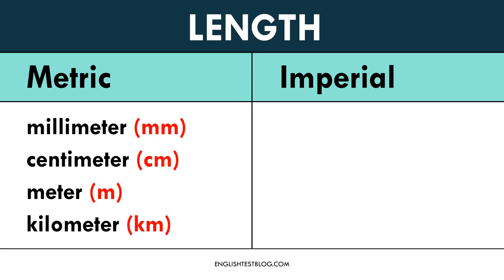In the imperial system, we use the inch, which is commonly used to measure smaller dimensions such as the size of a screen or the width of a book. One inch is equal to 2.54 centimeters. The foot is used for human height or room dimensions. One foot is equal to 12 inches, or approximately 30.48 centimeters in metric terms.